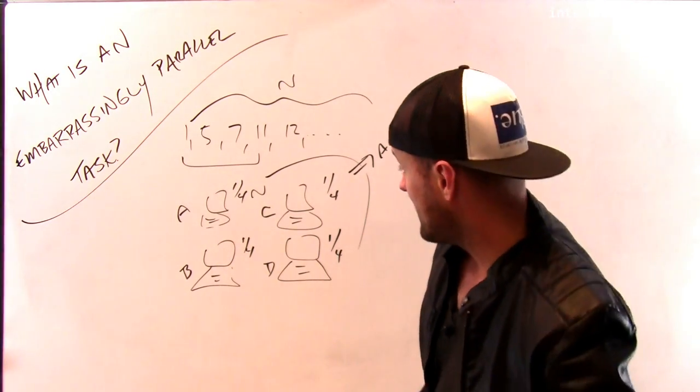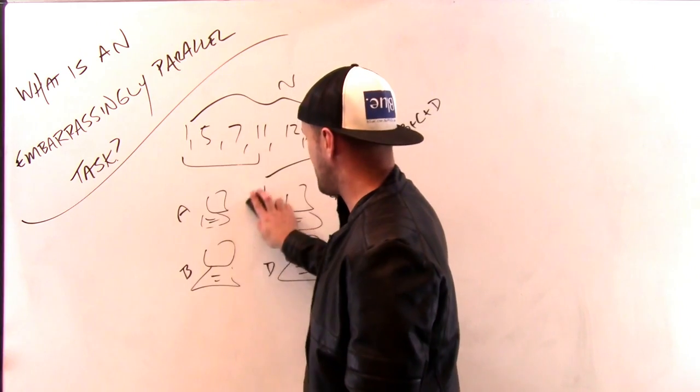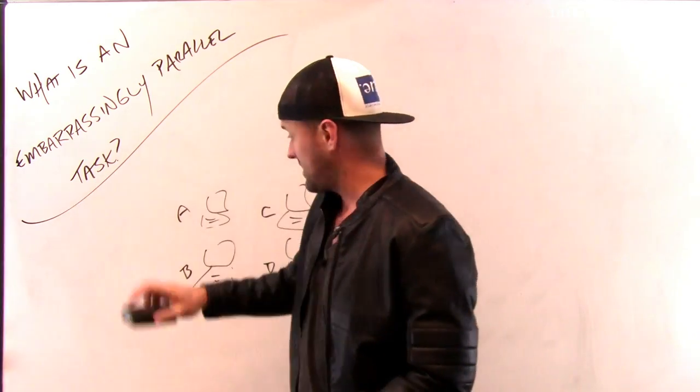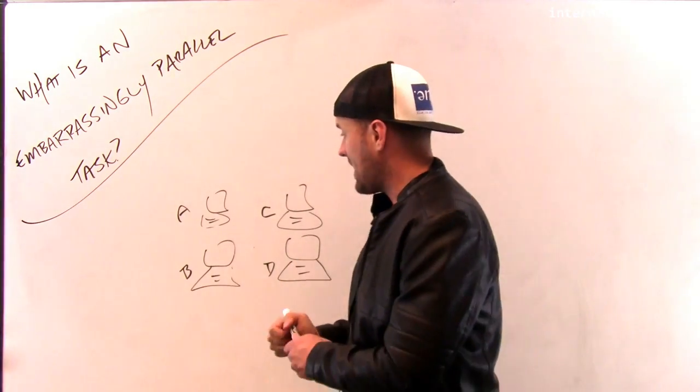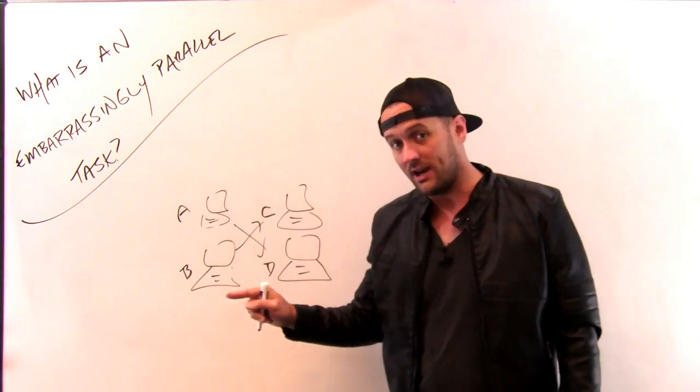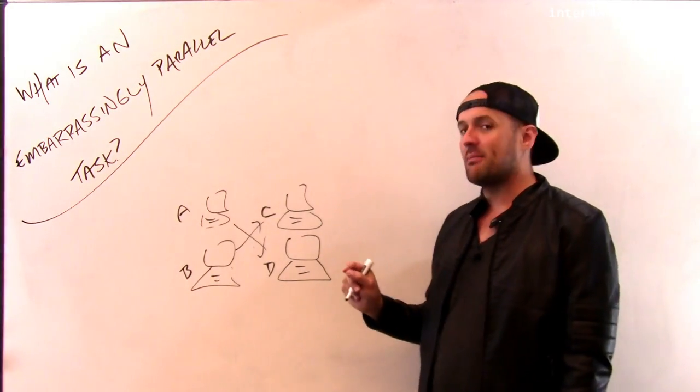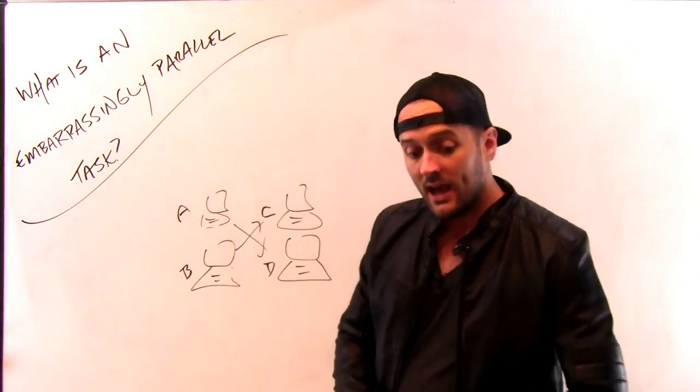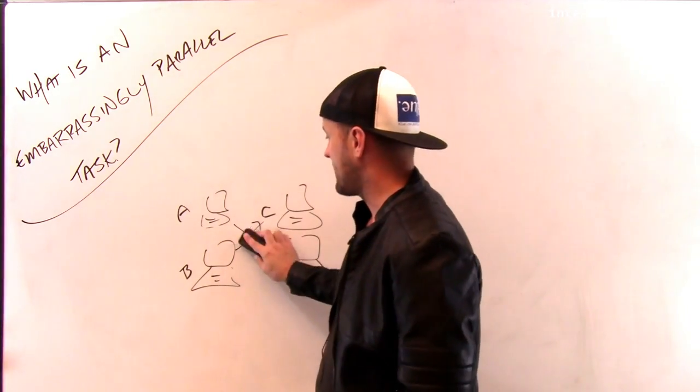In contrast, if these computers had to communicate with each other a lot while they were doing this task, let's say I gave them a different job to do, but the job required that they constantly talk to each other and there was a lot of communication going on, in that case, that job actually might be slower to run by splitting it up across multiple machines. And there are famous examples of tasks that are like this.